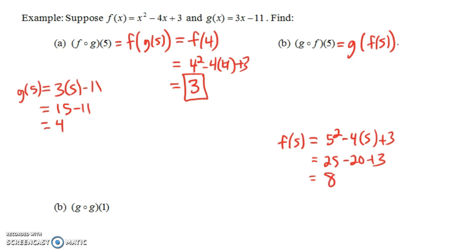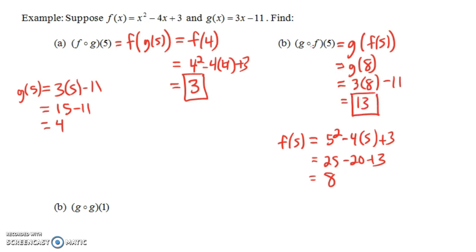So f of 5 is 8, meaning g of f of 5 is like g of 8. G of x is 3x minus 11, so g of 8 will be 3 times 8 minus 11, that's 24 minus 11, which is 13. Notice that g of f of 5 was not the same thing as f of g of 5. If you compose functions in a different order, you're not always going to get the same answer — in fact, most times you won't.